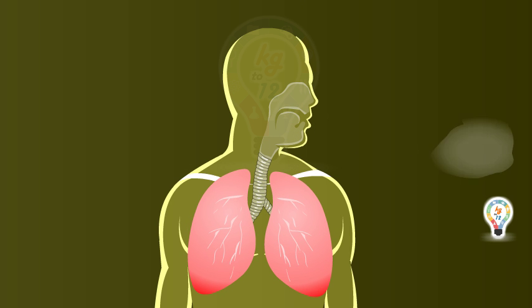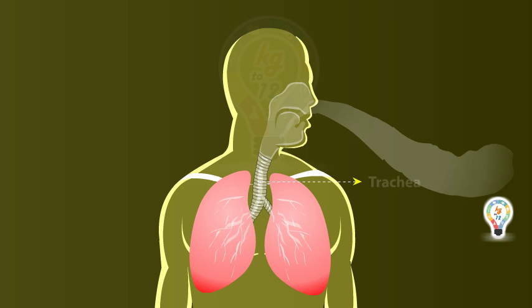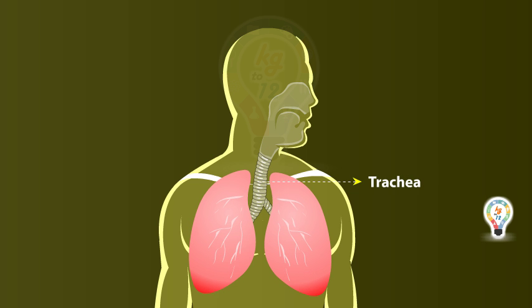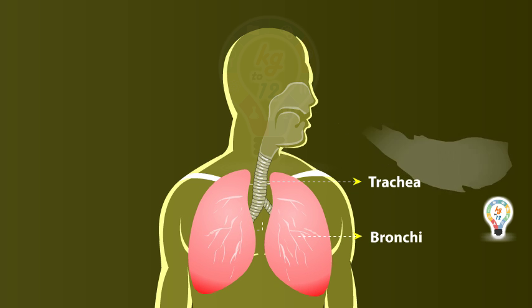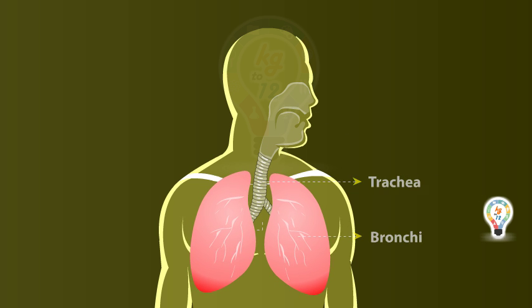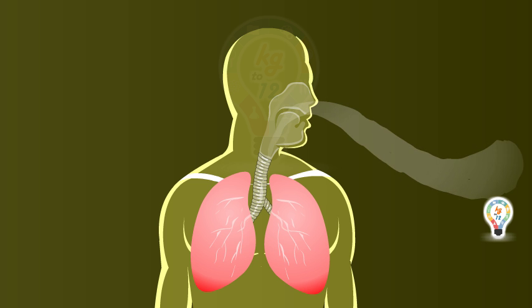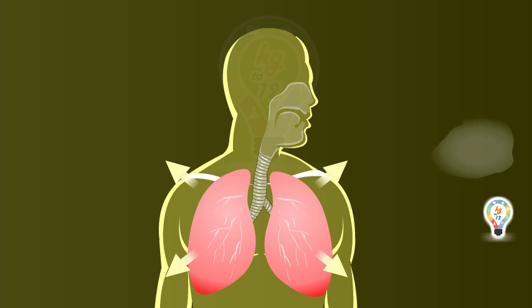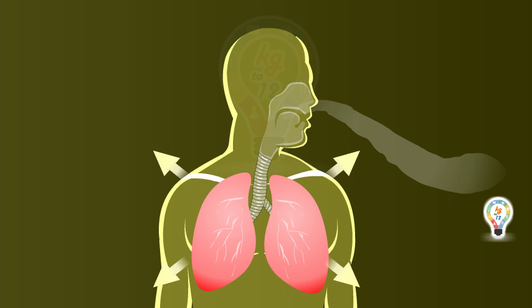Warm and clean air from the nasal cavity passes through the trachea and bronchi to reach the lungs. Lungs are spongy tissue with alveoli and blood capillaries.